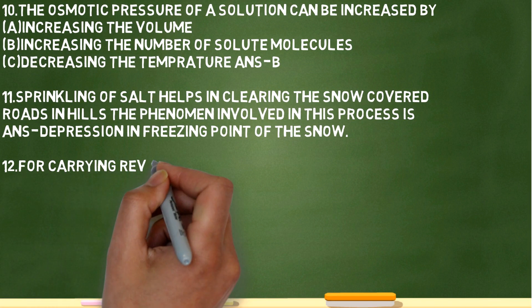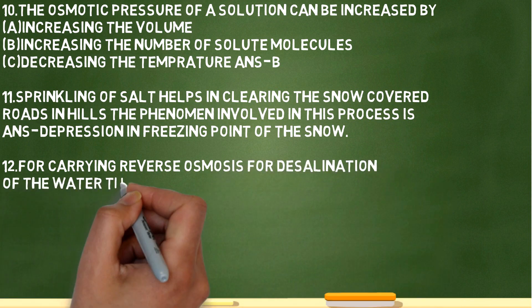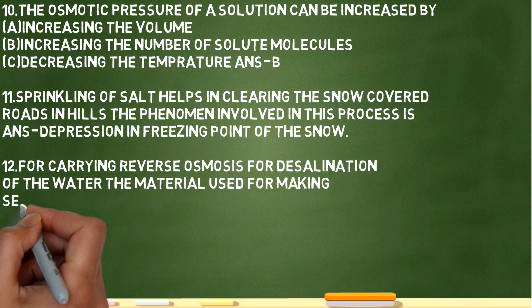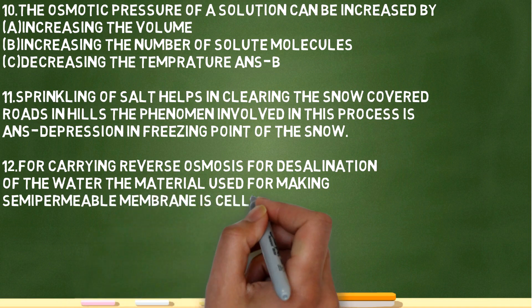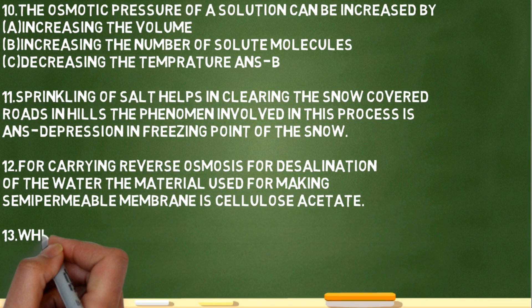Question twelve: for carrying reverse osmosis for desalination of the water, the material used for making semi-permeable membrane is cellulose acetate.